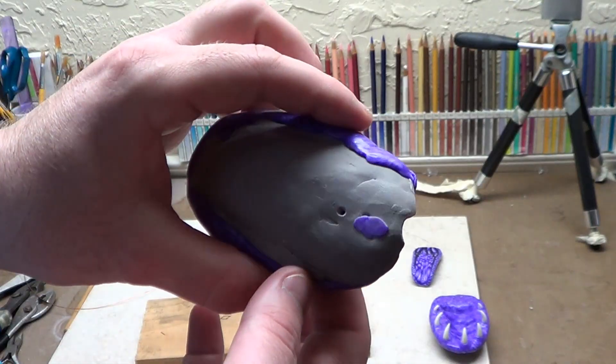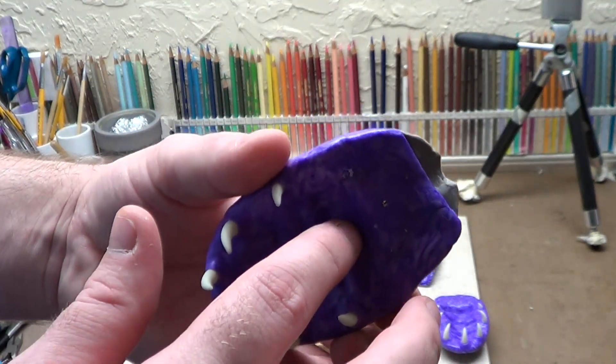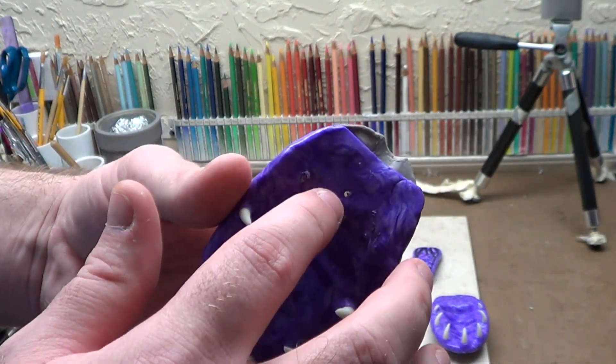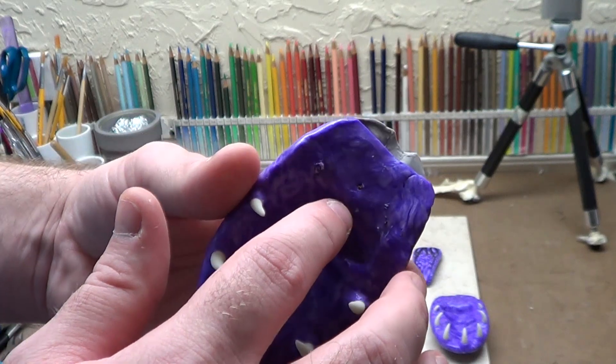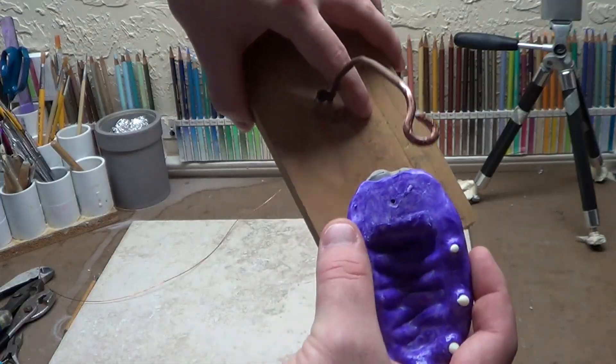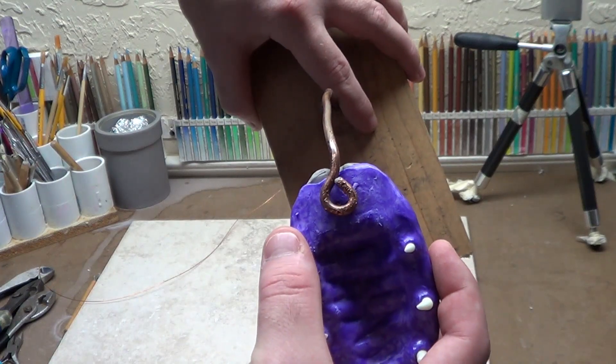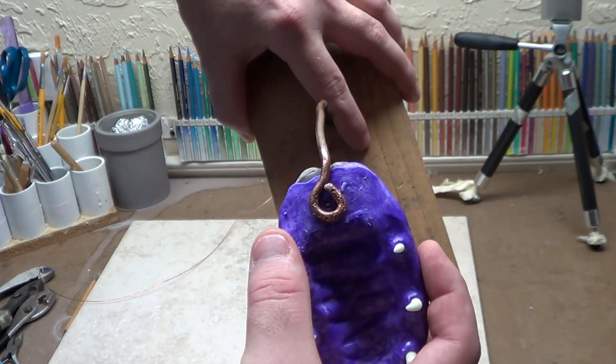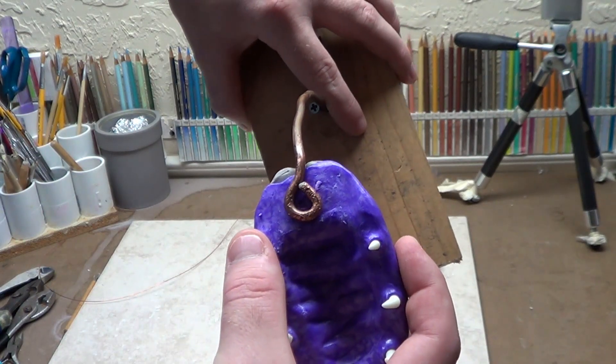If you remember me mentioning in the other videos, I poked a hole. You can see the light through there. I poked a hole through both of these pieces. If you look, that rests right there in the middle of that pad of clay that I made. That hole is pretty much right there in the center.